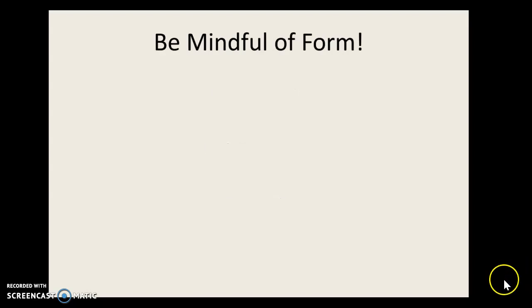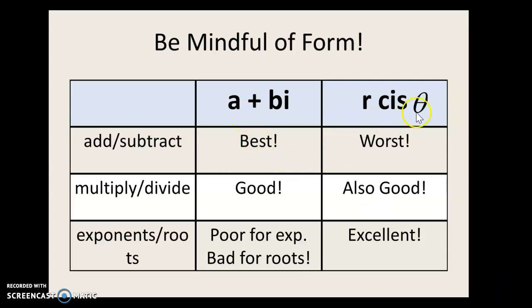Another thing to think about, we now have two forms for writing a complex number. We have a + bi and we have cis. So how do you know when you should use which form? This might be a good table to copy down into your notes. So if you are adding or subtracting, then a + bi is the best form. And r cis θ is not a good form to use for addition or subtraction. You will have to convert it back to a + bi in order to do addition or subtraction.